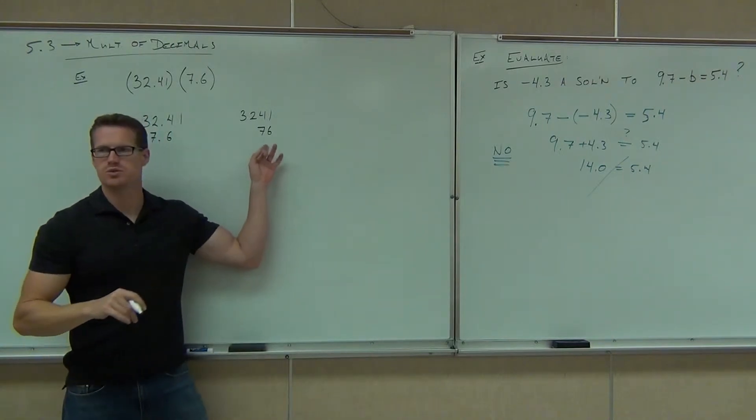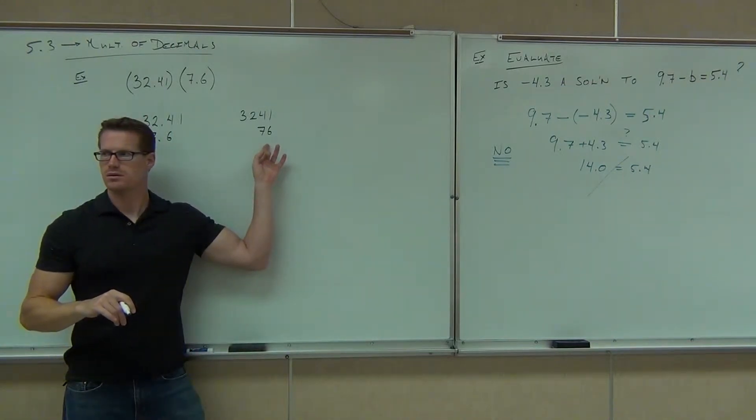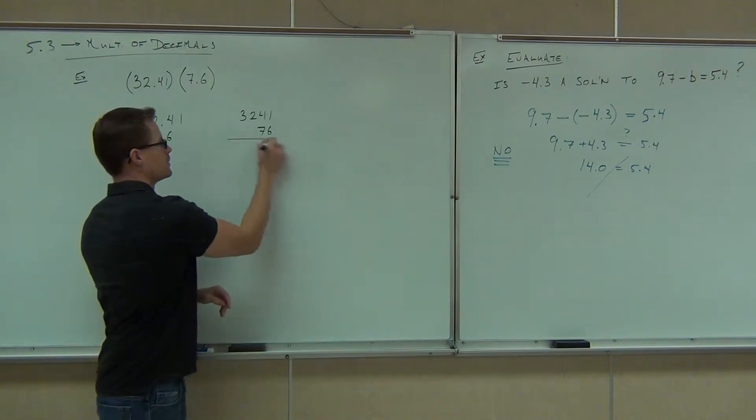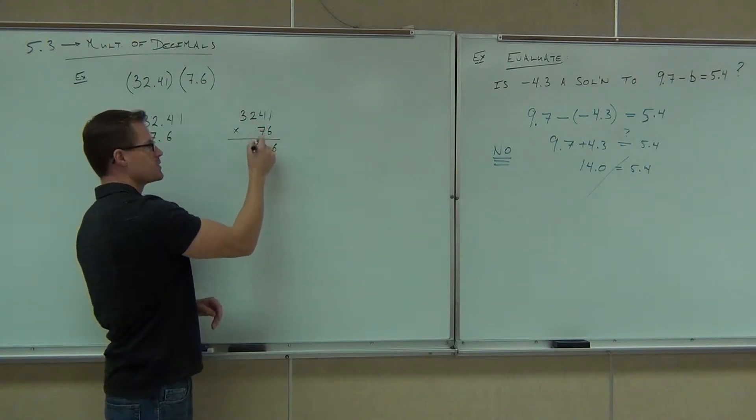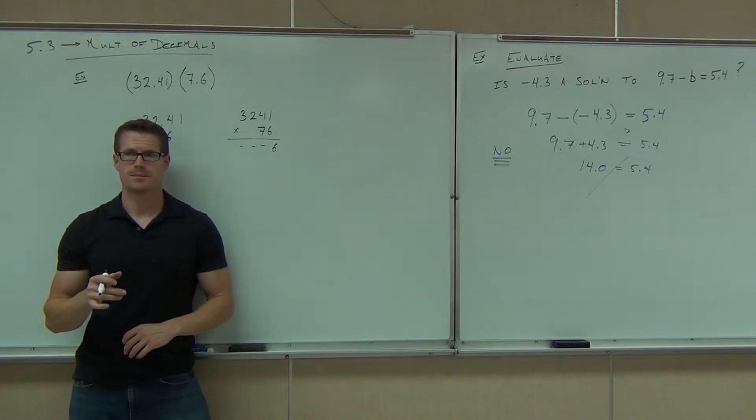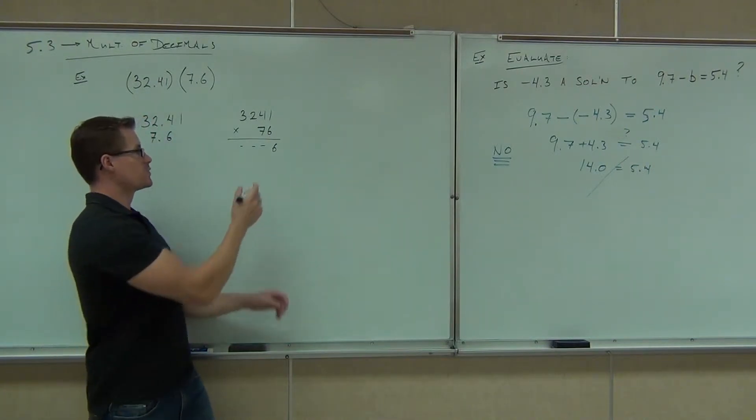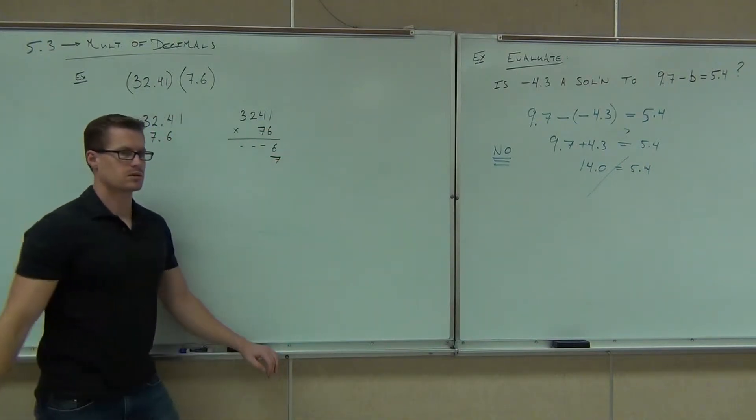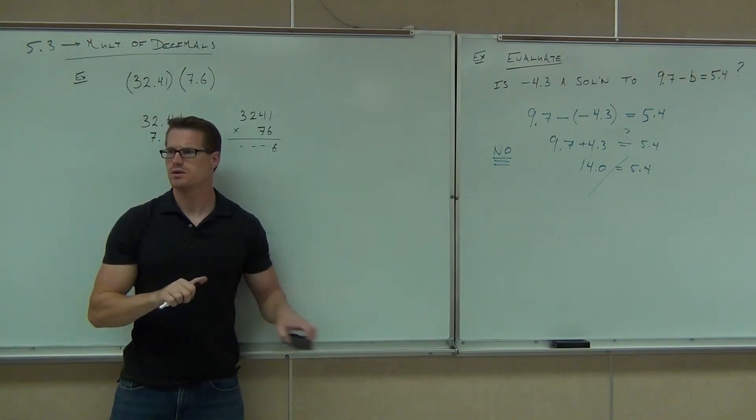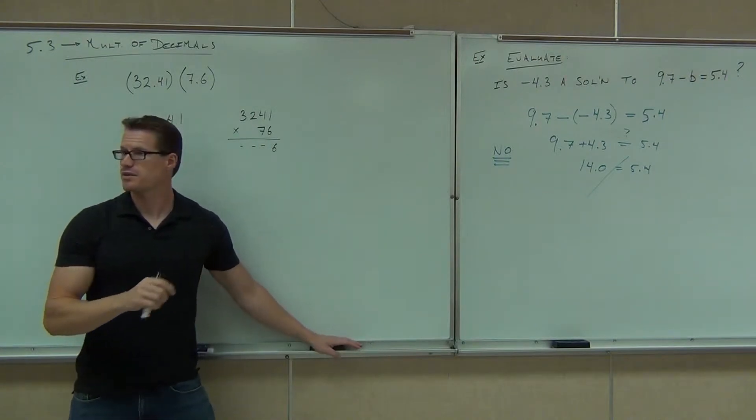And how would you multiply these numbers? What would you do here? Regular multiplication. So 6 times what? 1. And then 6 times what? 4. And then you'd do all those, wouldn't you? Yes. You would do 6, and then you'd multiply the rest of it. You'd go all the way through whatever these numbers happen to be. And then what would you do? You'd do a 7.